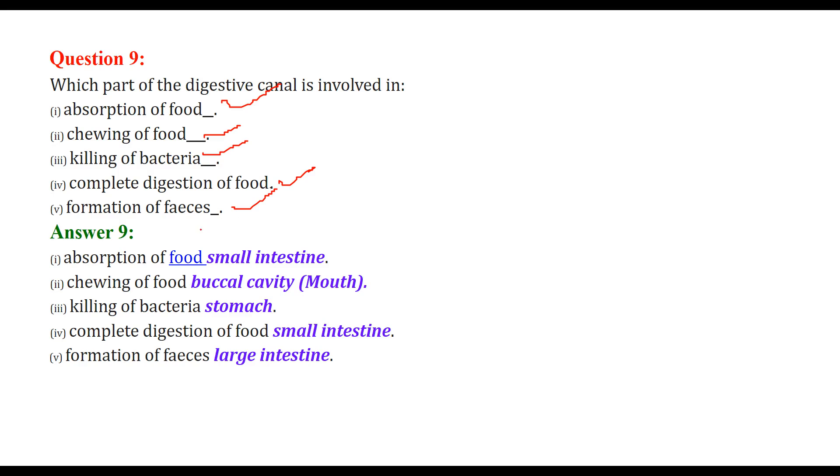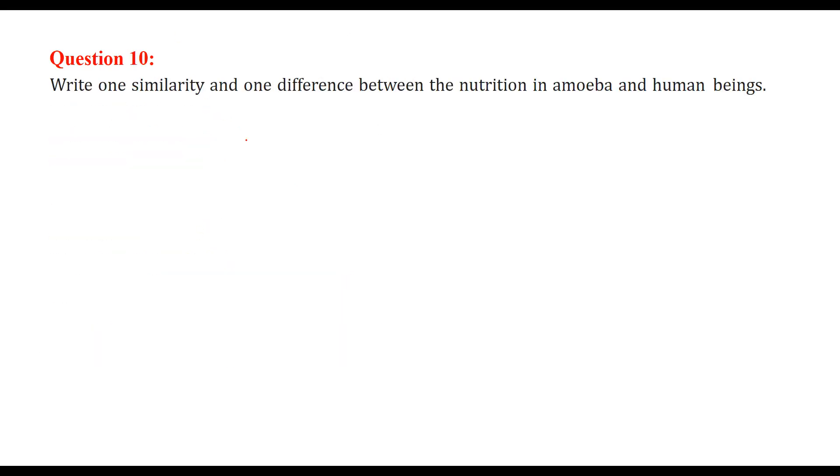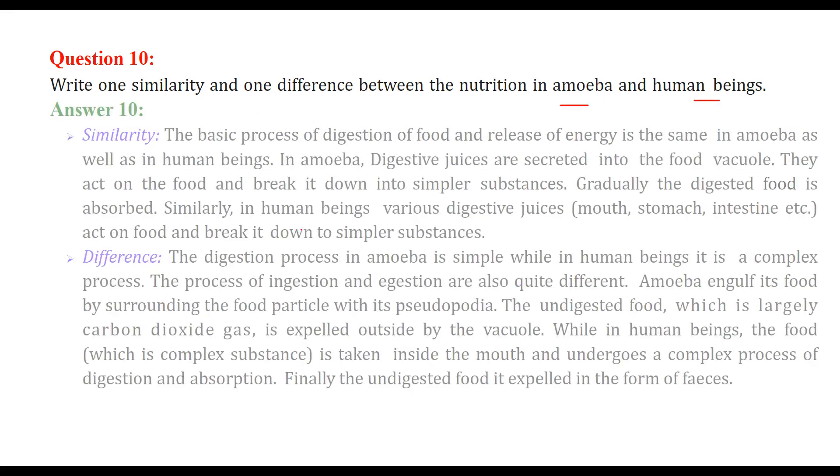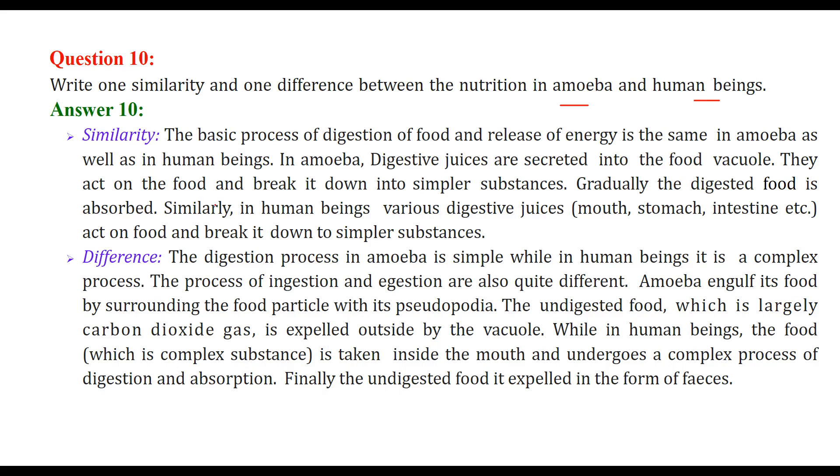Write one similarity and one difference between the nutrition in amoeba and human beings. There are similarities also, their differences also. Let us talk about the similarity first. The basic idea of our process of digestion of food and release of energy is same whether it be amoeba or human beings. In amoeba, digestive juices are secreted into the food vacuole. They act on food and break it into simpler substances.